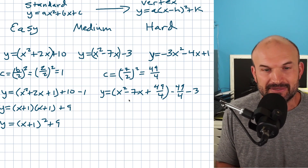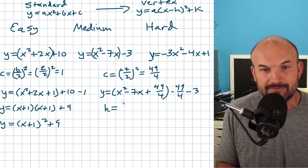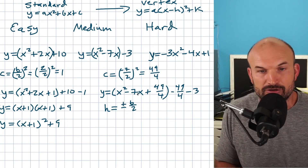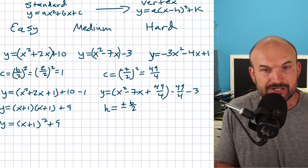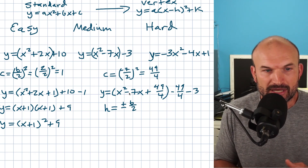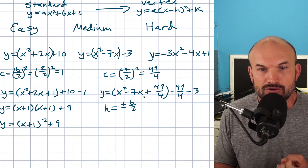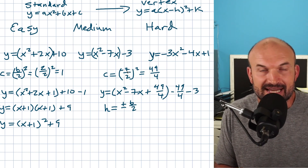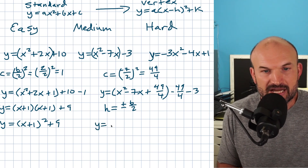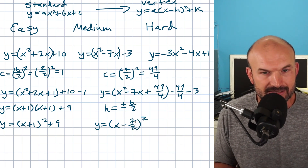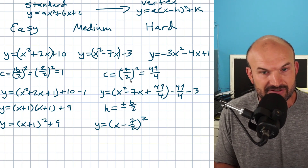To determine the sign, look at the middle term of your trinomial — if it's negative, you want x minus H; if it's positive, you want x plus H. The reason is that when you expand the binomial, the middle term of the binomial becomes the middle term of the trinomial. In this case we have negative seven, which works out to b divided by two as negative seven halves. So I can rewrite this as x minus seven halves, quantity squared.